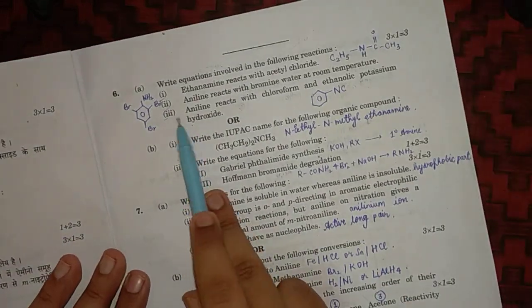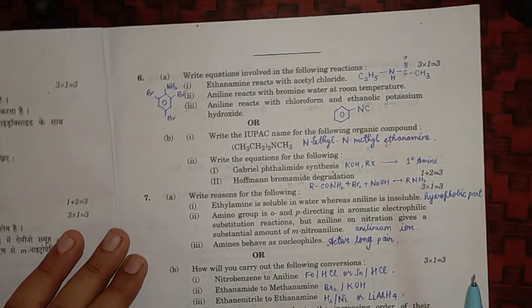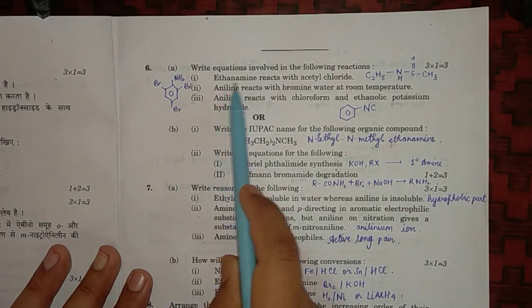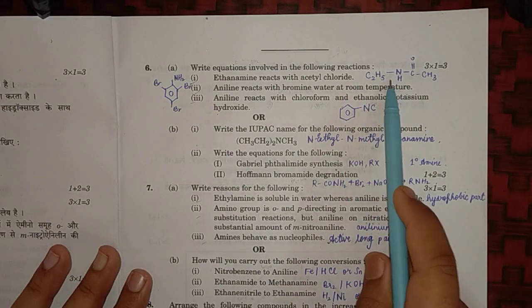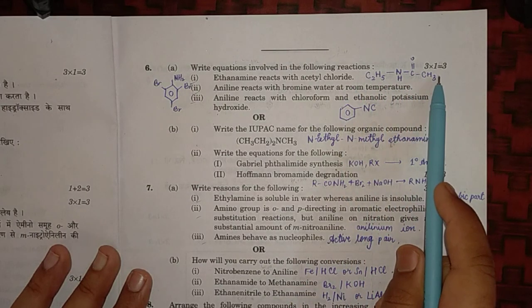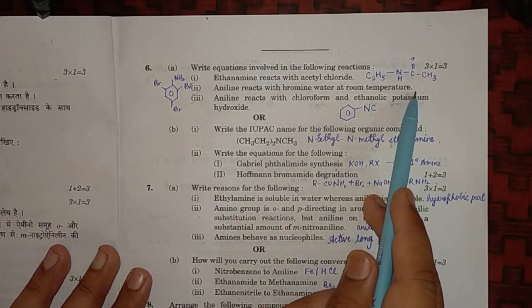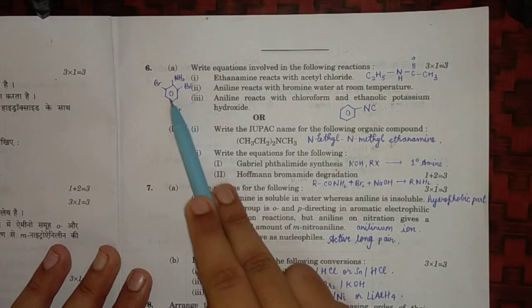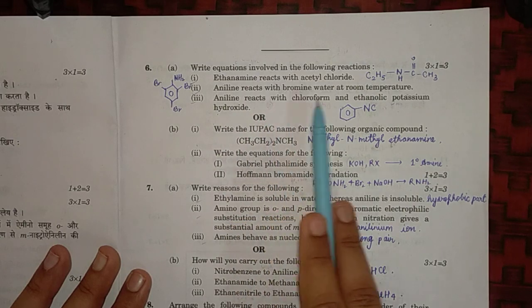Question number six: write the equation involved in the following reaction. Ethane amine reacts with acetyl chloride, so it will form C2H5NHCOCH3. When aniline reacts with bromine water at room temperature, it forms 2,4,6-tribromoaniline.